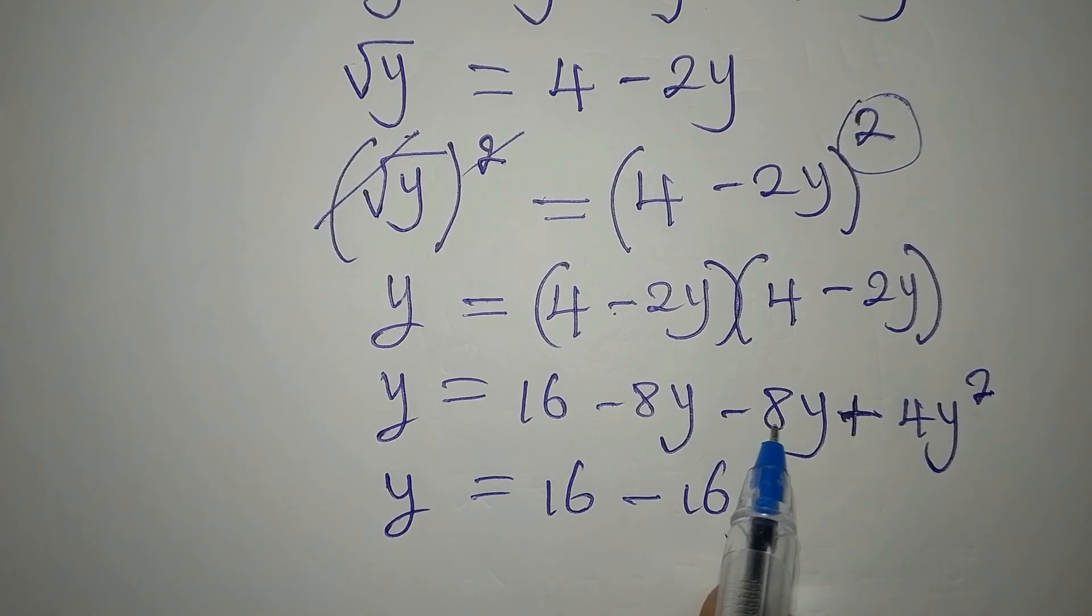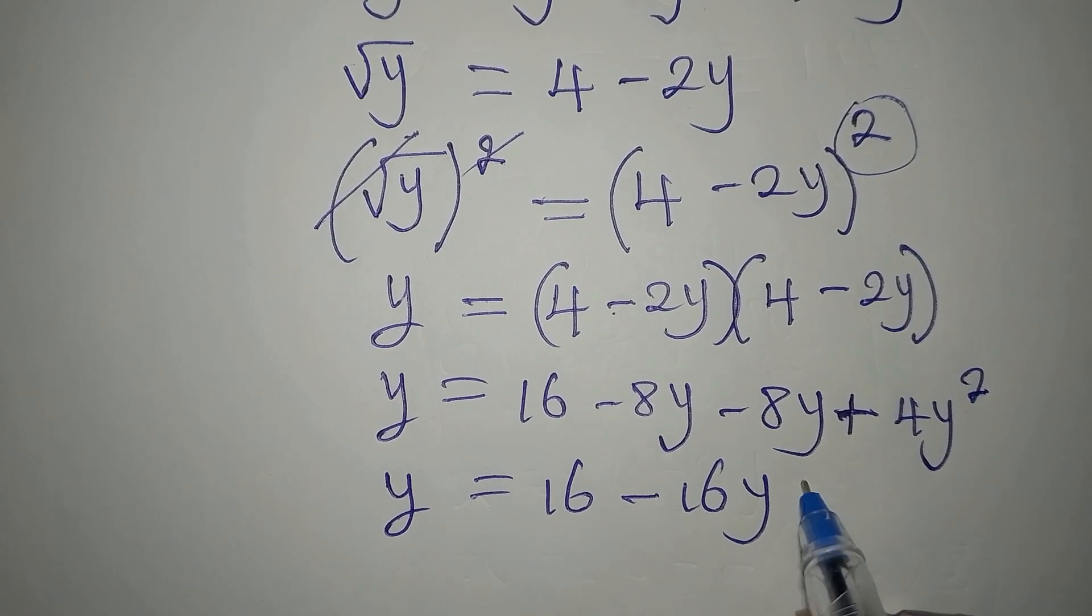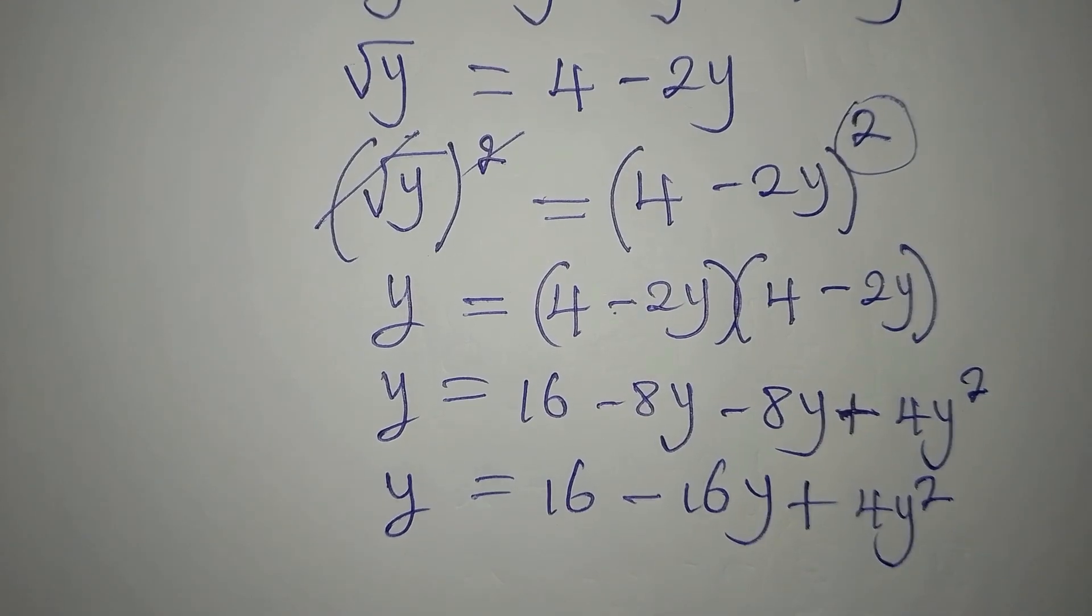This is y equals 16 minus 16y, because minus 8y minus 8y is minus 16y, then plus 4y squared.